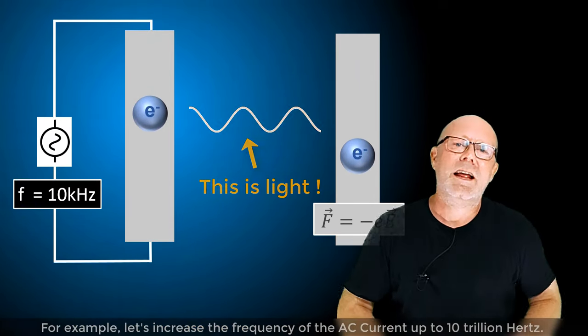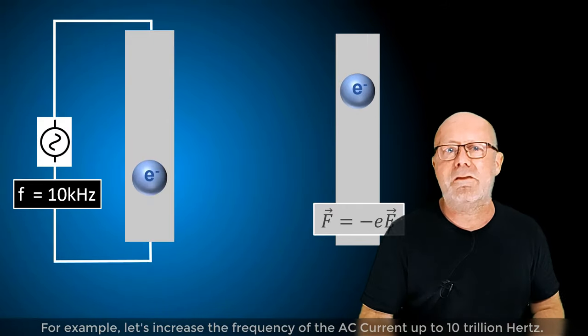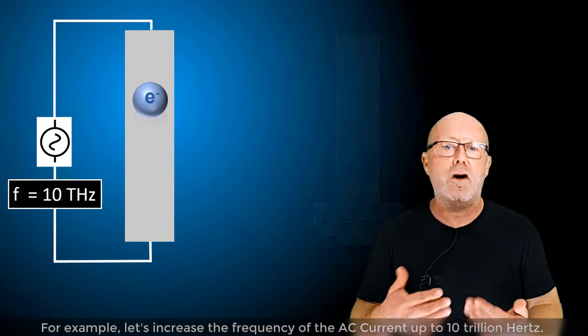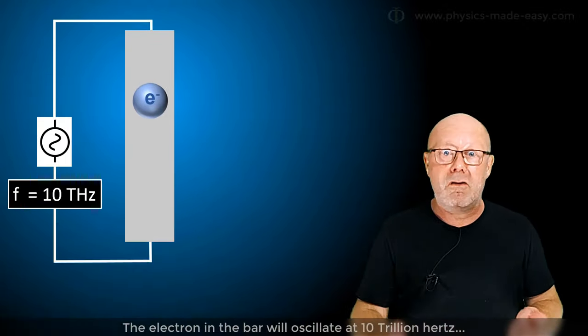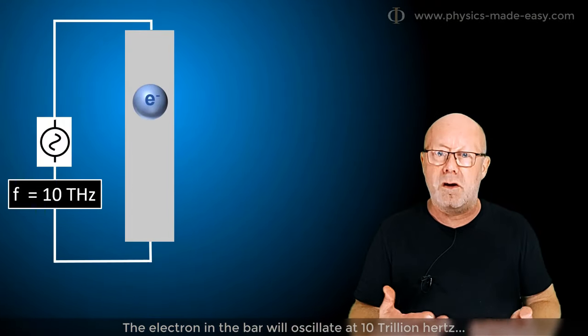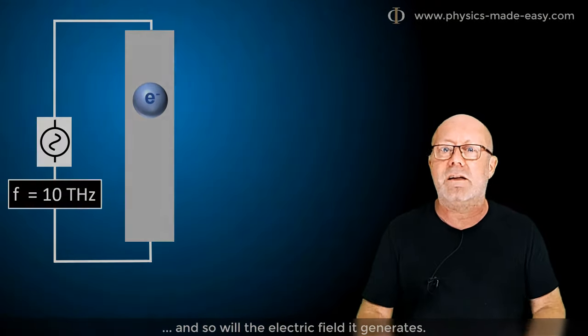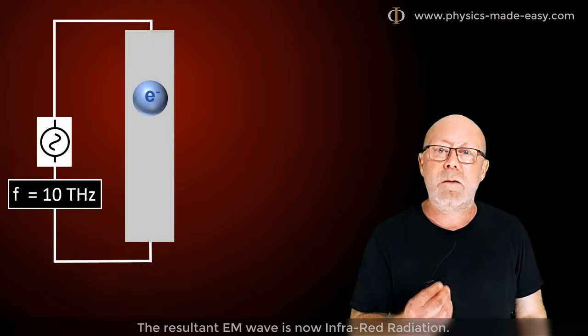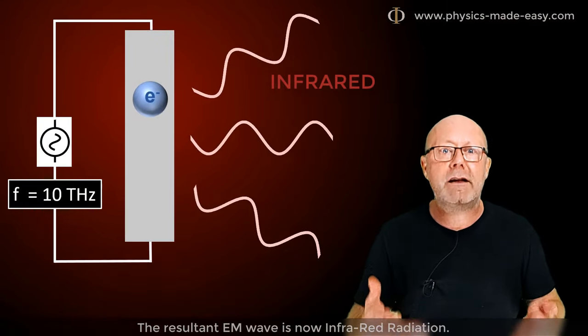For example, let's increase the frequency of the alternative current up to 10 trillion Hertz. The electron in the bar will oscillate at 10 trillion Hertz, and so will the electric field it generates. The resultant EM wave is now infrared radiation.